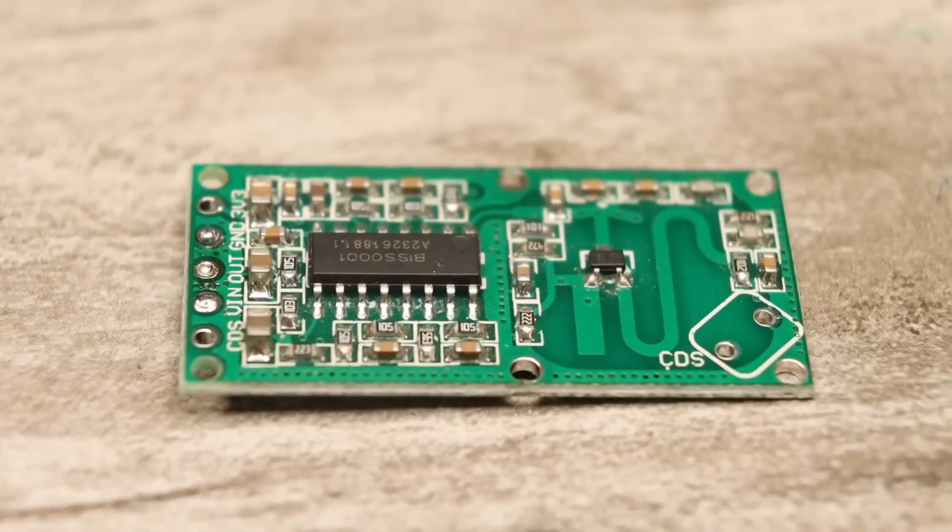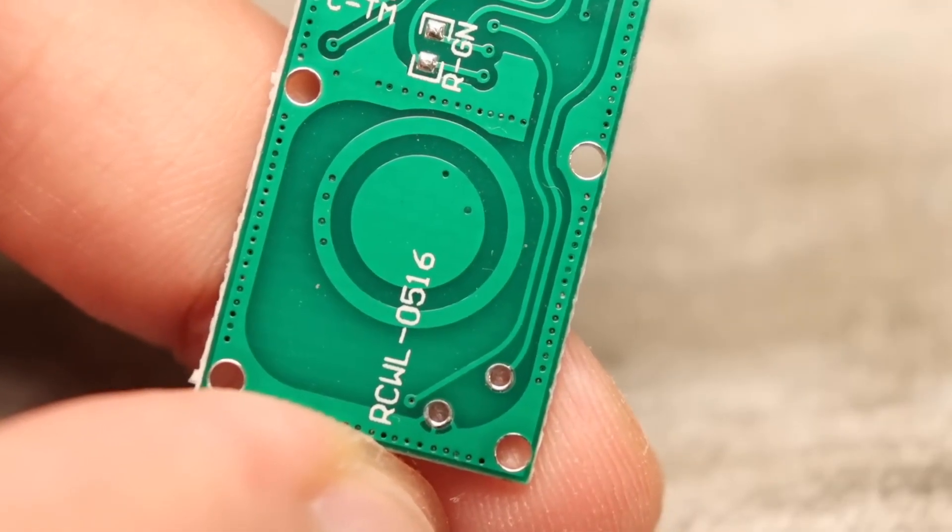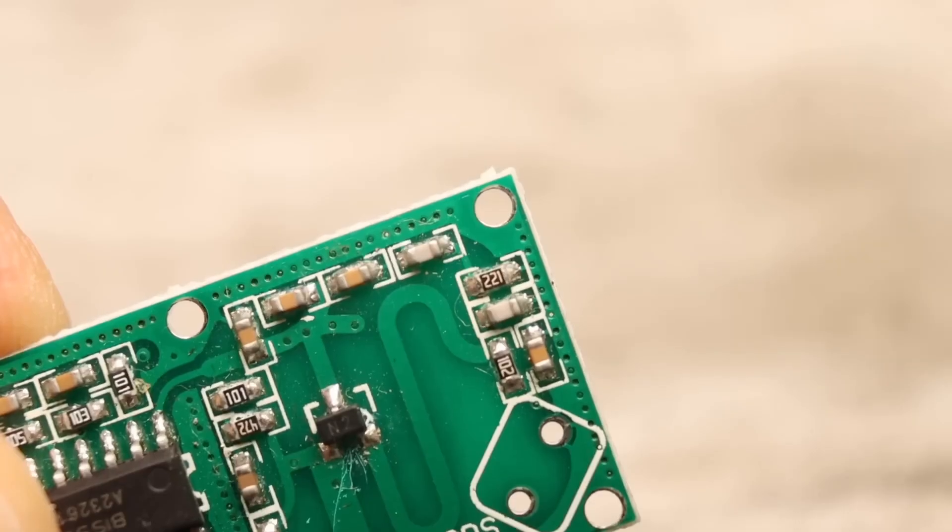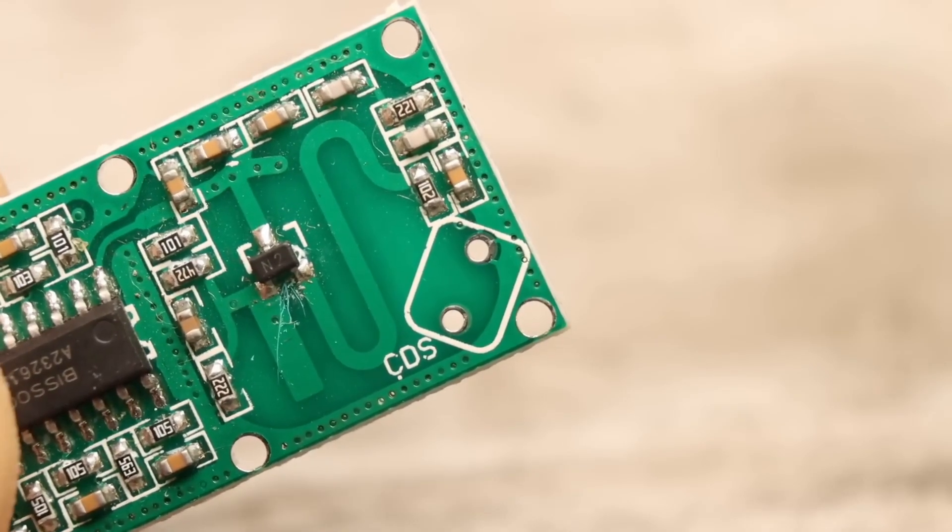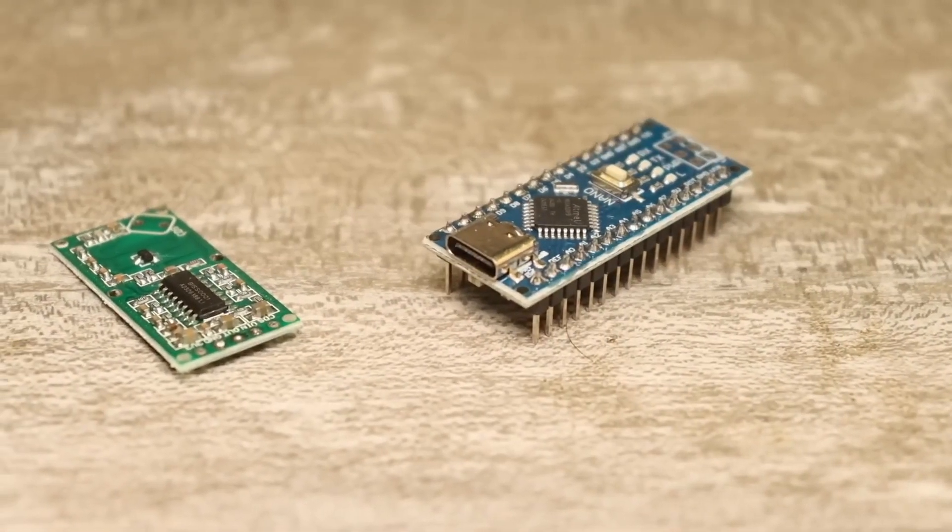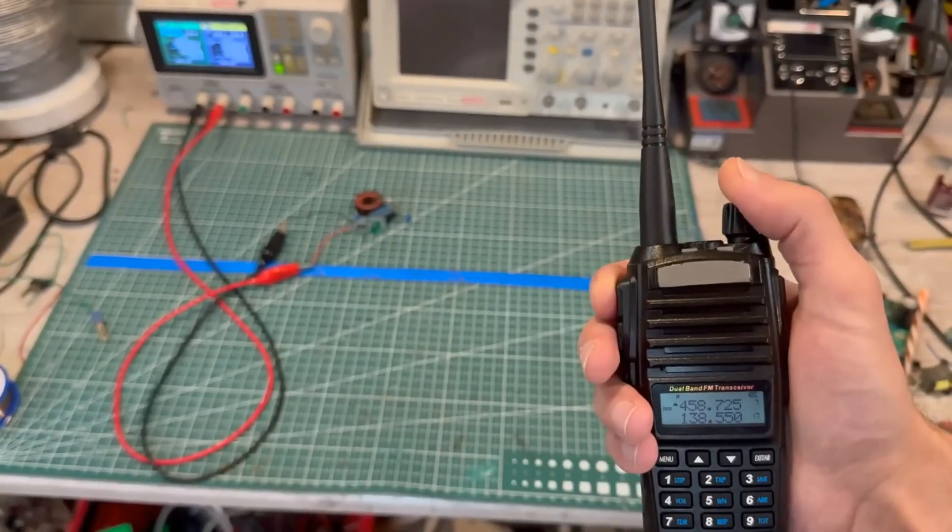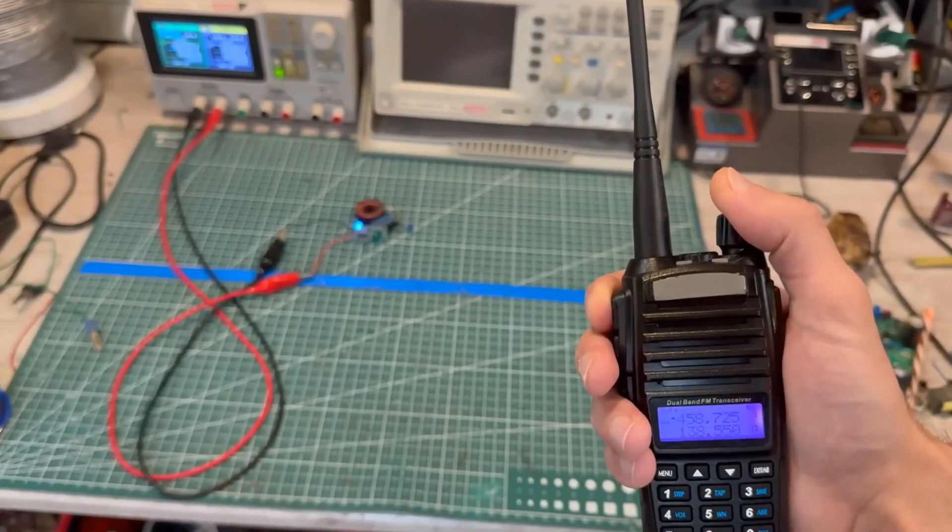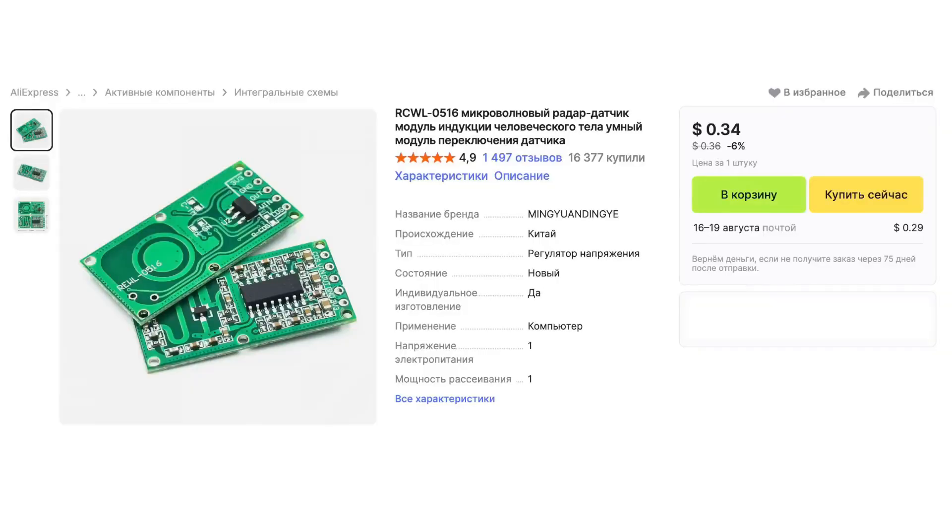The module's supply voltage range is from 4 to 28 volts, with a current consumption of up to 3 milliamps. The operating frequency is 3.18 gigahertz. The detection range is from 5 to 9 meters. The range can be adjusted by selecting the specified resistor. The module supports installing a photoresistor if you want the sensor to work only at night. With a sensor like this and a regular Arduino, you can build an excellent security alarm system. But there are also drawbacks. It reacts to any movement, can't distinguish a person from other objects, and generally can't tell cold from warm objects. Triggering through walls is also a drawback in many cases. It is sensitive to radio waves. But despite all this, considering how cheap it is, it's definitely worth playing around with this sensor.